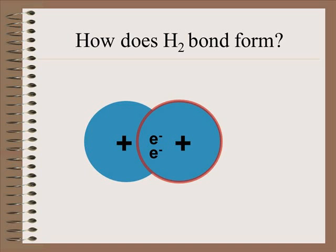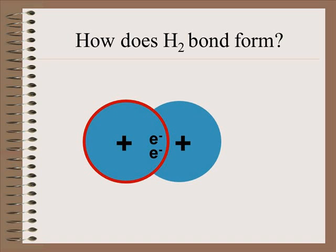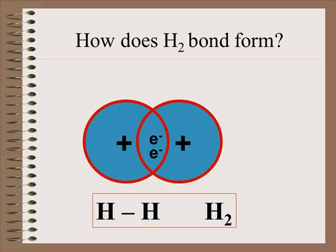So this hydrogen atom believes both electrons belong to it. This hydrogen atom believes both electrons belong to it. And that perfect optimal distance where the orbitals overlap and electrons are shared is the covalent bond. That covalent bond is represented with a line which represents the bond between the two hydrogen atoms.